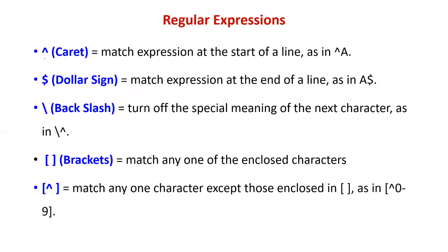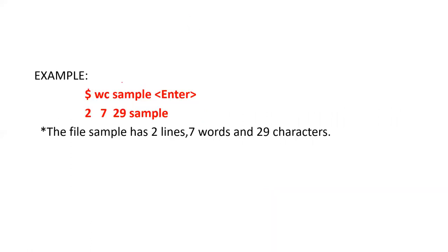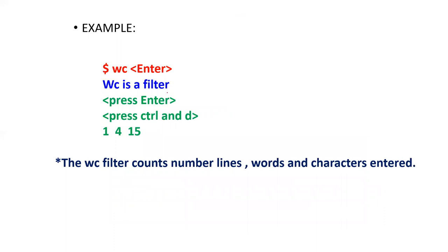Next is the wc filter. The wc filter is used to count the number of lines, words, and characters. You can use wc with options: hyphen l displays number of lines, w for number of words, c for number of characters. For example, wc on a sample file shows two lines, seven words, and twenty-nine characters. This is one line with four words: wc is a filter. Fifteen characters including spaces.